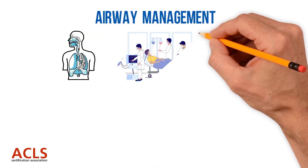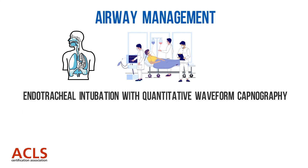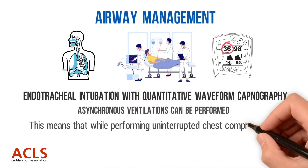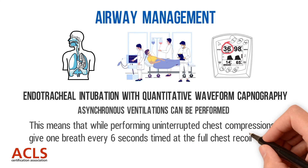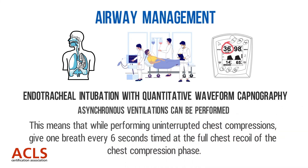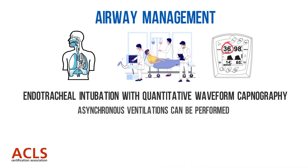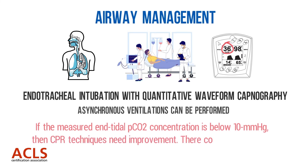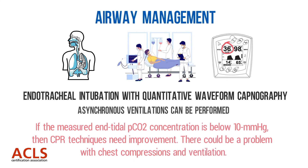For airway management, consider inserting an advanced airway such as endotracheal intubation with quantitative waveform capnography. Once the endotracheal tube is inserted, asynchronous ventilations can be performed — meaning that while performing uninterrupted chest compressions, give one breath every six seconds timed at full chest recoil of the chest compression phase. Quantitative waveform capnography can also be used to assess CPR quality: if the measured end-tidal partial pressure of carbon dioxide concentration is below 10 mmHg, then CPR techniques need improvement, indicating a possible problem with chest compressions or ventilation.